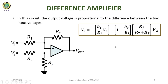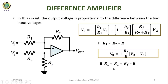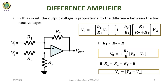Now, if you assume R1 equals R2 equals R, the above equation will be reduced to V0 equals Rf divided by R1 into V2 minus V1. And if you assume all resistors are equal, that is R1 equals R2 equals Rf equals R, the equation reduces to V0 equals V2 minus V1. From this output expression, we can conclude that the output voltage will be the difference of two input voltages.